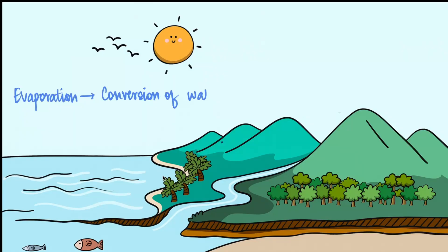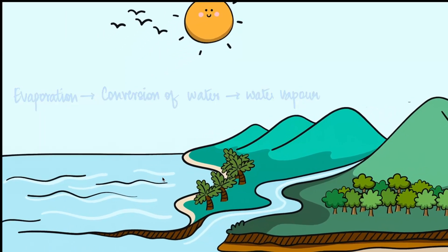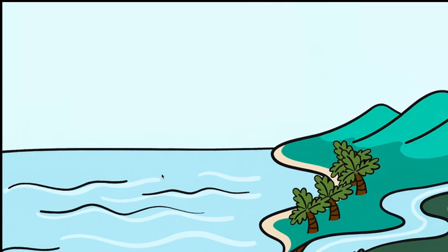Now we know that evaporation is the process by which water droplets are converted to water vapour. So on warm sunny days, the sun heats up the rivers, the ponds, the oceans, turning water into invisible water vapour. And this is what we understand as evaporation.